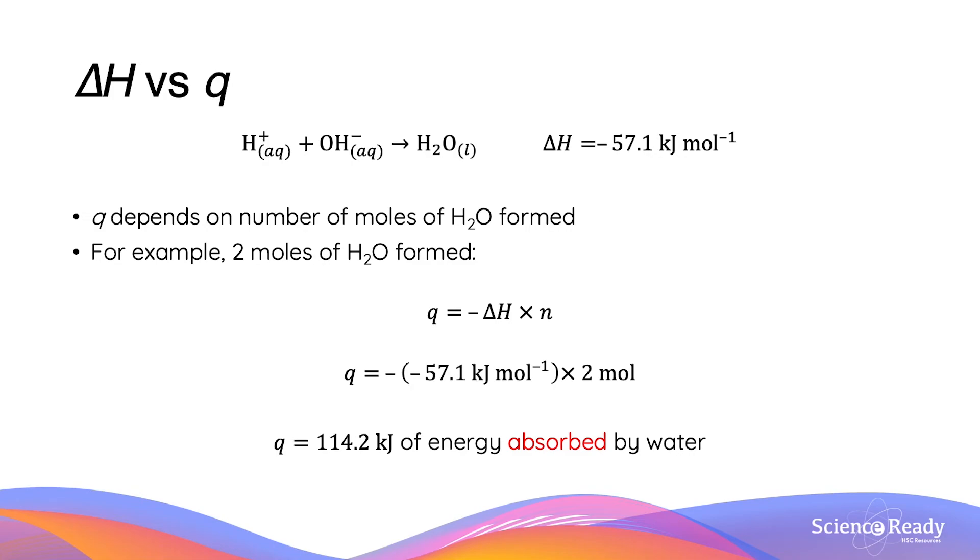So let's look at an example here. If 2 moles of H₂O were formed, using our relationship for ΔH and q, we would be able to work out the total heat quantity by multiplying the negative of the ΔH value by 2.